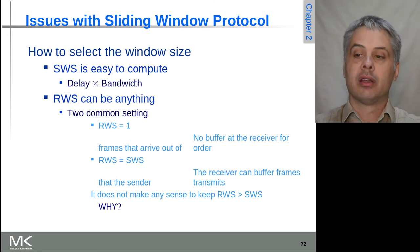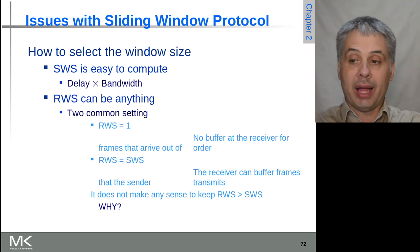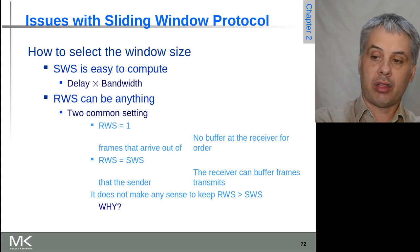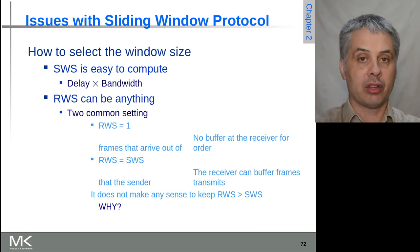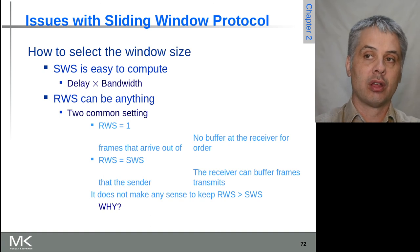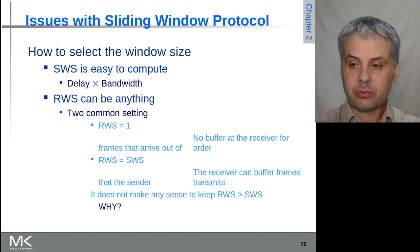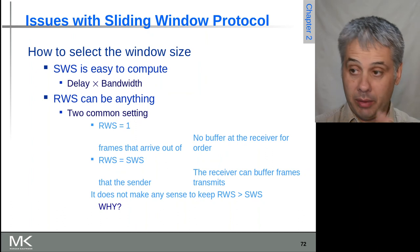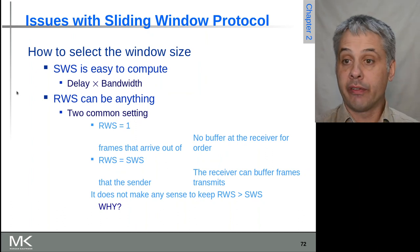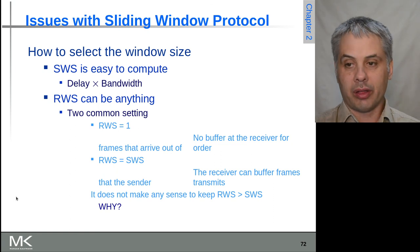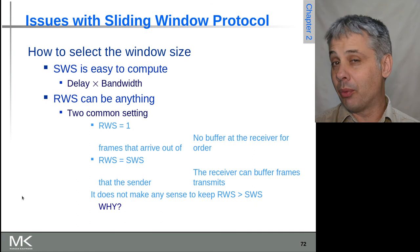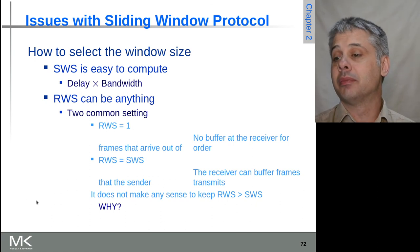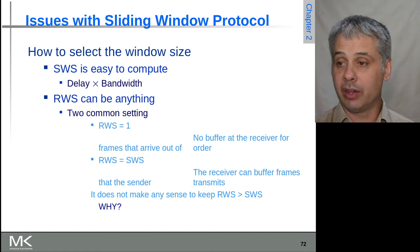On the other hand, you could also make the receive window size match the sender window size, so that no matter what happens in terms of packet loss, you can maximize performance to the extent possible. That makes sense if it's feasible to do. But there's no point having a receive window size larger than the sending window size. We'll think about why, and then return in the next video.